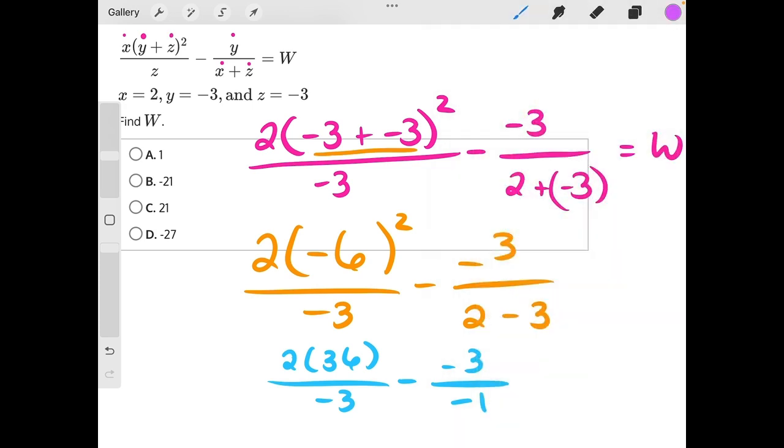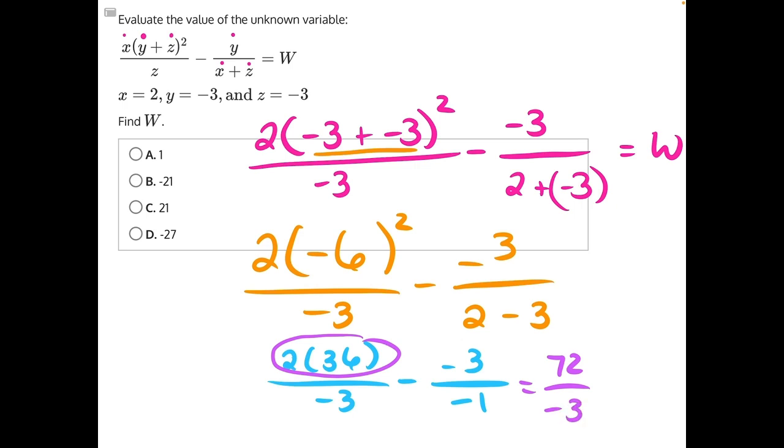And now we can continue to simplify. In our numerator up here, 2 times 36 would give us a positive 72. So we'll have 72 over negative 3 minus negative 3 divided by a negative 1 would give us a positive 3.